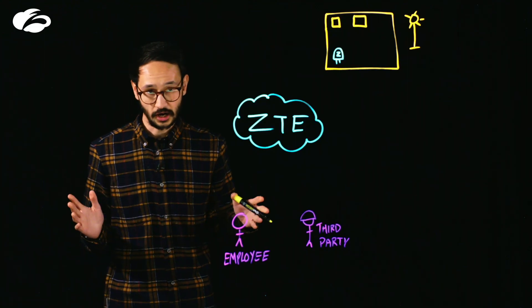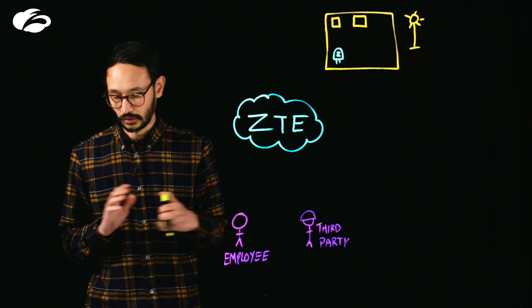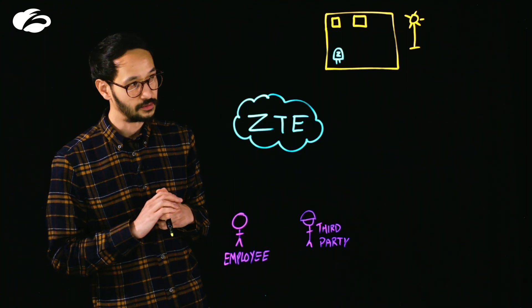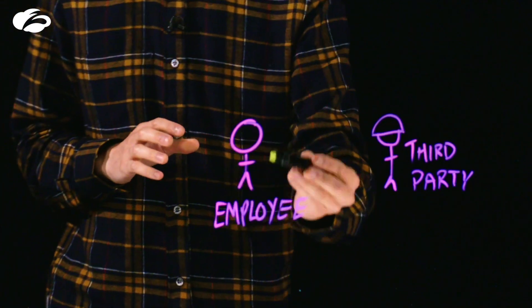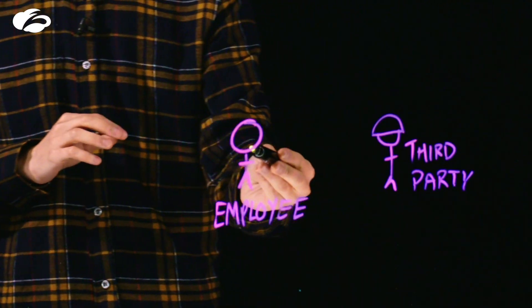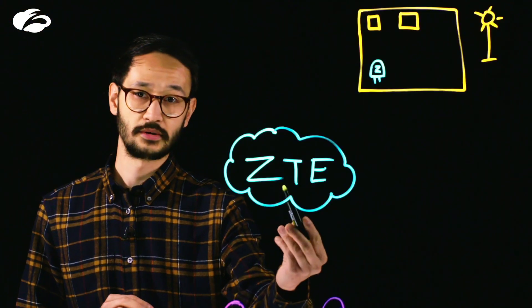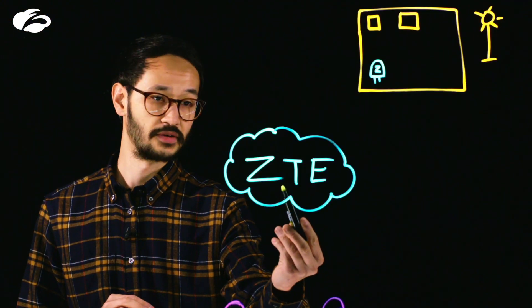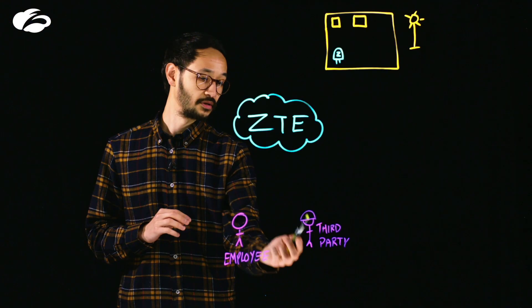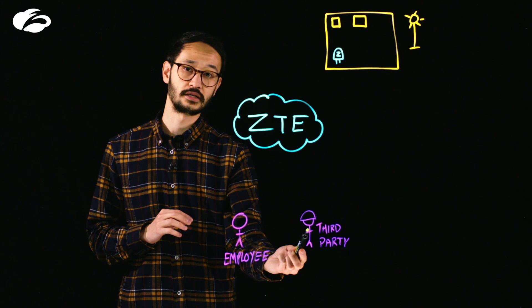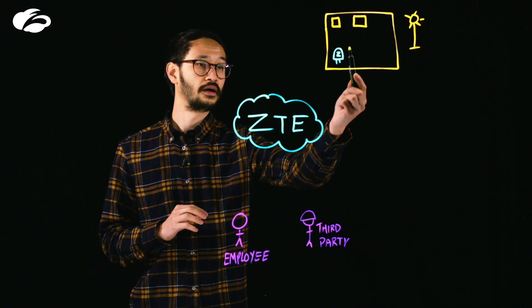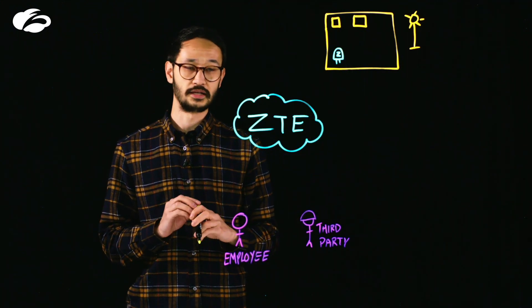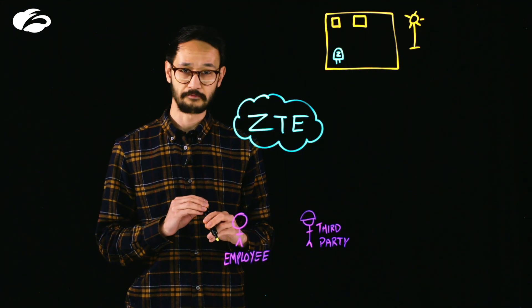I have pre-drawn various elements on this lightboard. You can see the employee down here, the zero trust exchange over here, the third party over here, and what is a solar farm.